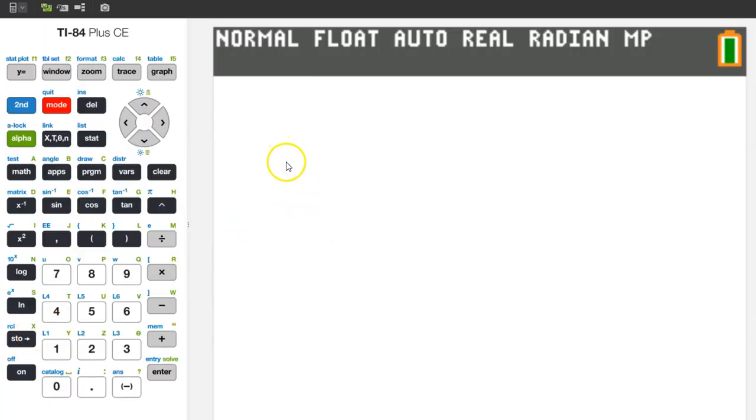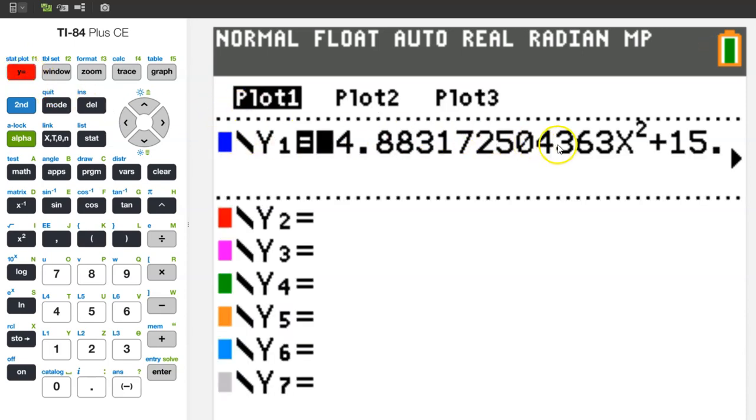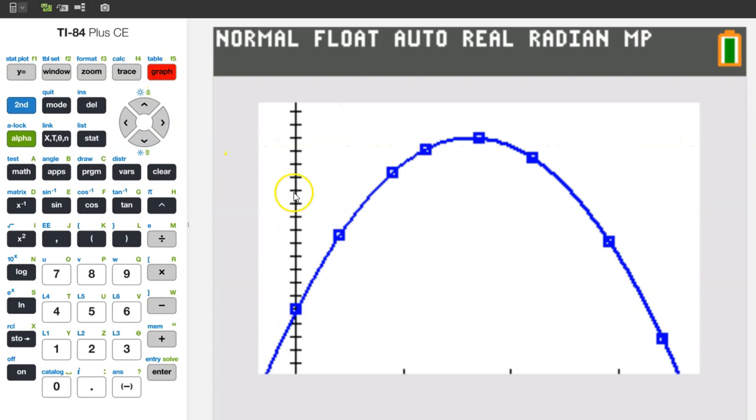When we generated the regression equation, we opted to have it stored as Y1 under the Y equals list. So, let's take a look. Here it is. Let's take a look at the graph and see how well this model fits the data. Let's look at the scatter plot. With the plot on, we can just hit graph. So, this is a really good fit.